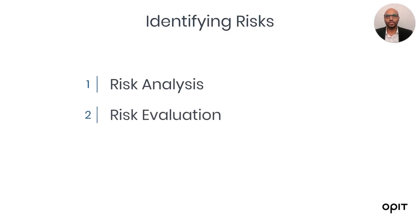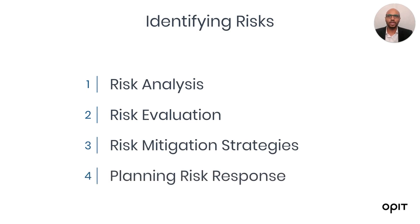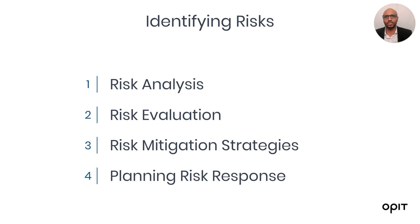Before we begin, let's briefly overview the structure of our session today. First, we'll start with risk analysis, discussing how to determine the impact and likelihood of identified risks using a variety of methods. Then we'll look at risk evaluation, where we compare analysis results with our predefined risk criteria to help guide decision-making. And finally, risk mitigation strategies — we'll delve into the strategies to manage risk, including risk avoidance, risk reduction, risk transfer, and risk acceptance. We'll wrap up by discussing how to devise actions to minimize threats and maximize opportunities tied to project objectives. This involves the critical task of identifying and assigning a risk owner.